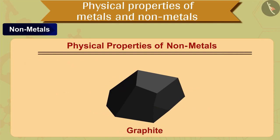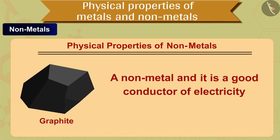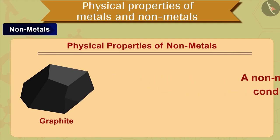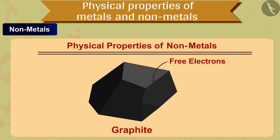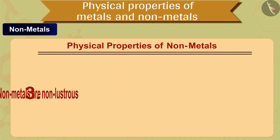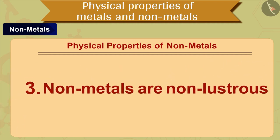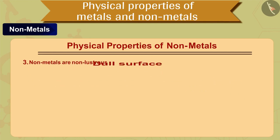You will be fascinated to know that graphite, which is a non-metal, is a good conductor of electricity. It is the only non-metal which is known to conduct electricity due to the presence of free electrons. The third property of non-metals is that non-metals are non-lustrous.